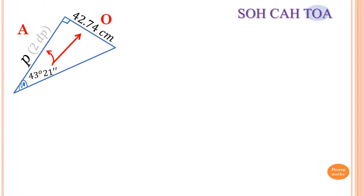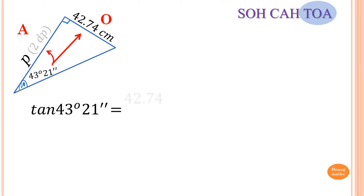So we use TOA — T stands for tan. Tan of whatever that angle is, in this case 43 degrees and 21 minutes. So tan of 43 degrees 21 minutes is equal to O over A. O is 42.74 and A in this case is P, so over P.